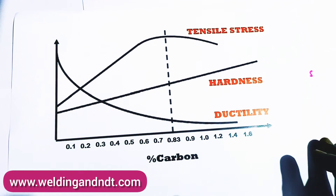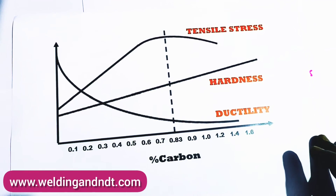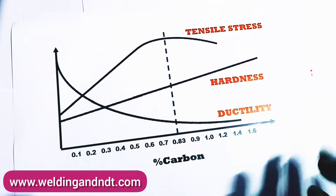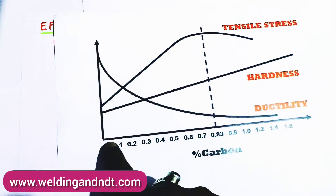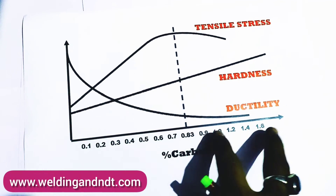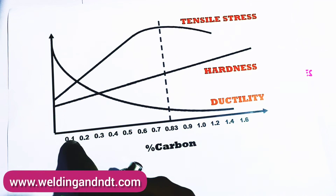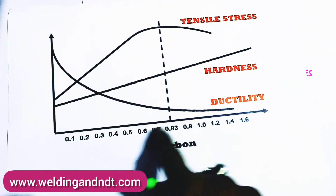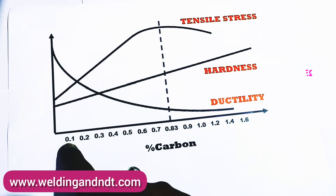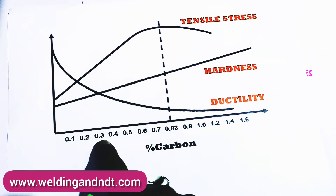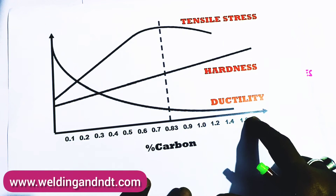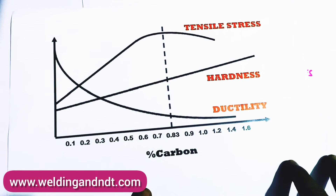Here I have a graph, and in this graph on the horizontal axis the percentage of carbon is written: 0.1, 0.2, 0.3, 0.4, and so on — the percentage of carbon is shown along this axis.